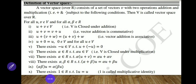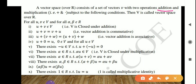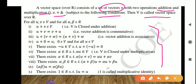Now we will see the definition of vector space. A vector space over R — over the scalar field R — consists of a set of vectors V with two operations: addition (denoted +) and scalar multiplication (denoted ·). Subject to the following conditions, V is called a vector space over R. If these 10 conditions are satisfied, then we can say that V is a vector space over R.